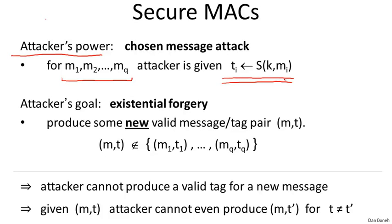For example, the attacker might send Alice an email. Alice might want to save the email to disk in a way that prevents tampering, so she computes a tag on the message and saves the message and tag to disk. Later the attacker might steal Alice's disk and recover the tag on the message he sent her. So this is a real-world example of a chosen message attack where the attacker obtained a tag on a message he gave Alice.